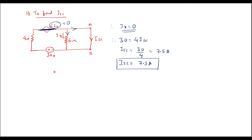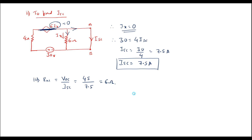Now we calculate the third parameter, Rn, Norton's resistance. Rn = VOC / ISC = 45 / 7.5 = 6 ohms.